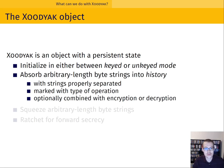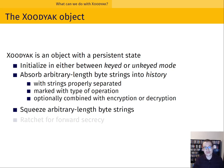The idea is that you absorb one or more arbitrary length byte strings into a persistent state, and this state really represents the digest of all the strings absorbed thus far. We refer to this digest as history. The object takes care of properly domain separating all the strings and allows you to optionally combine absorption with an encryption or decryption operation. Once all input strings have been absorbed, you then squeeze an arbitrary length byte string, and you can also ratchet for forward security.